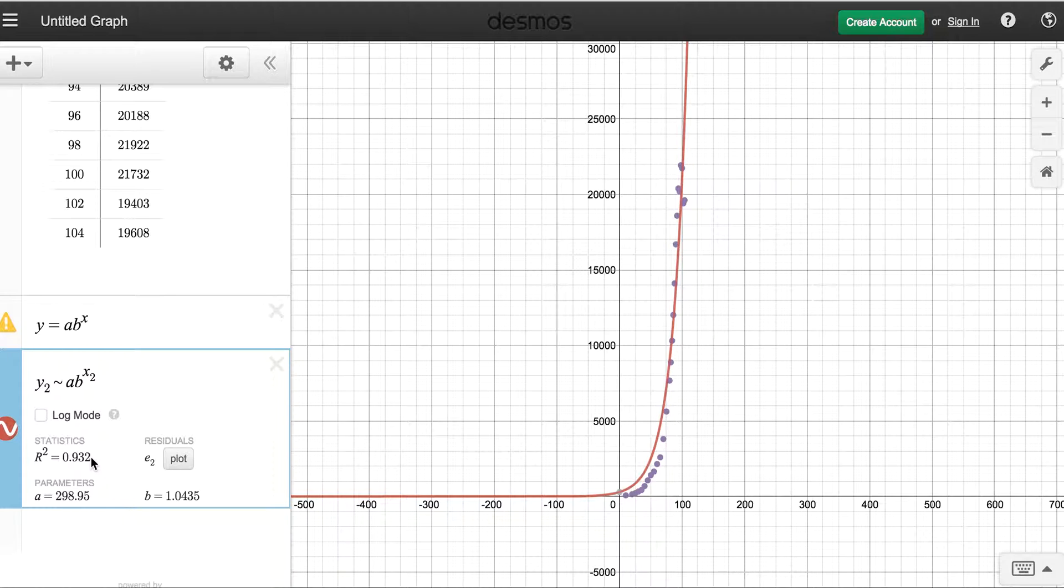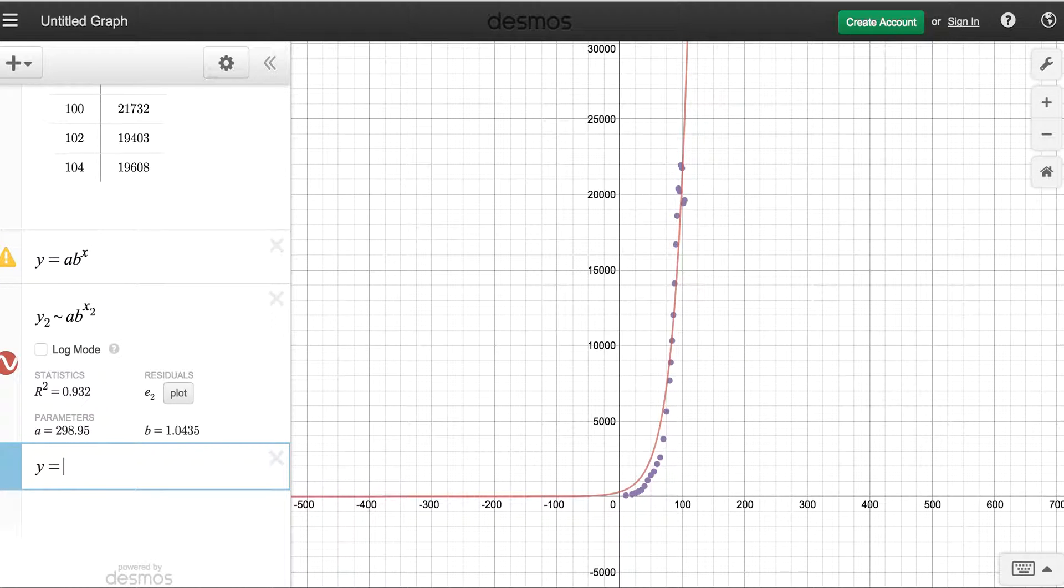Alright, so when we look at this, I have a pretty good correlation coefficient of 0.932. It gives me my parameters here, and you can see that it fits the data pretty well. It wasn't as good as the last one we just did, but it did fit it fairly well, so we can make some relatively confident predictions using this equation. So this would be the equation, y equals a, oops, that was 5, b to the x. Cool. That's it. That's how we use Desmos to make regressions. Fabulous.